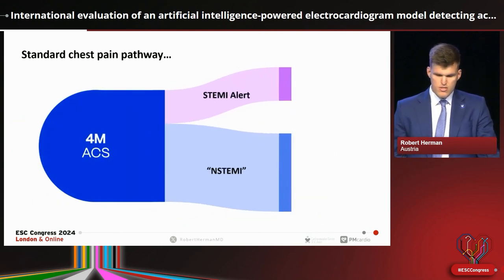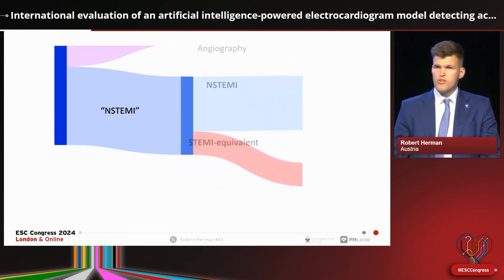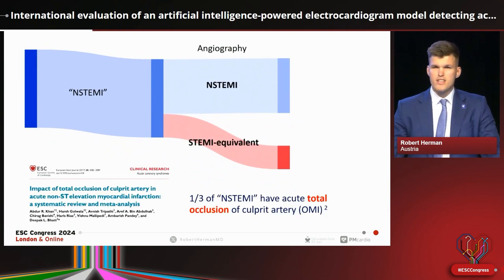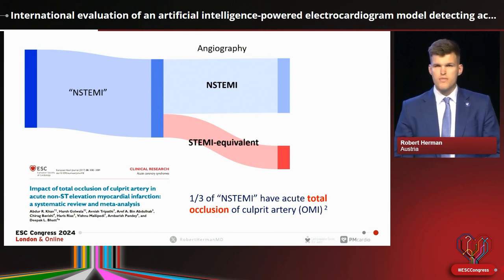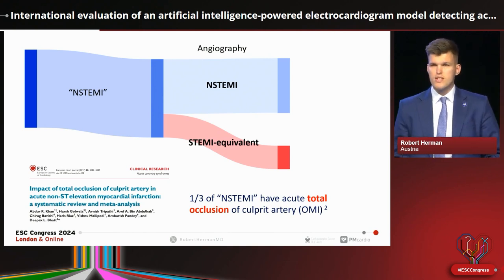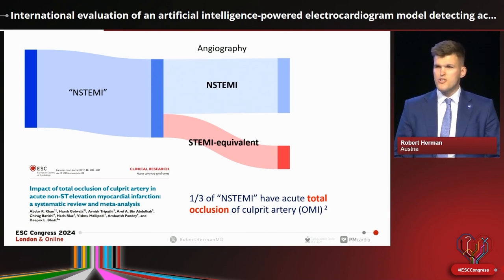To summarize the STEMI pathway: we have a lot of false positives, anywhere between 30% to 50%. What's clinically more relevant is the patients we today call non-STEMIs. We've shown — and this has been corroborated by many meta-analyses — that one-third of patients we call non-STEMI actually have an acutely occluded culprit artery at angiography, the same pathology that STEMI is trying to identify.